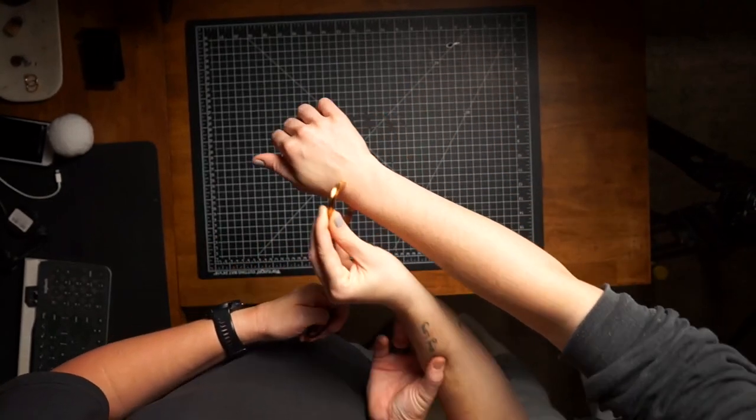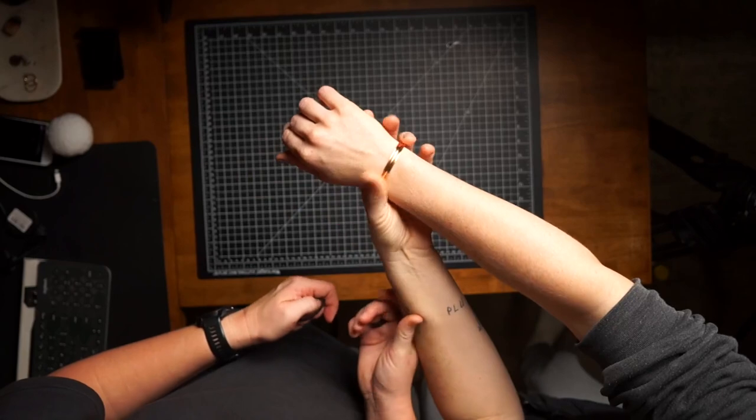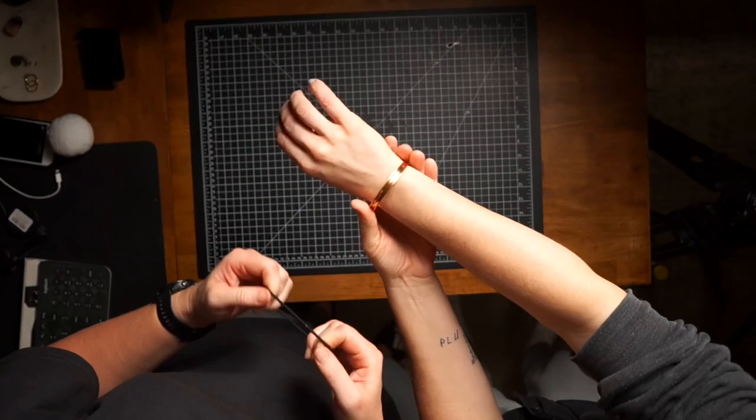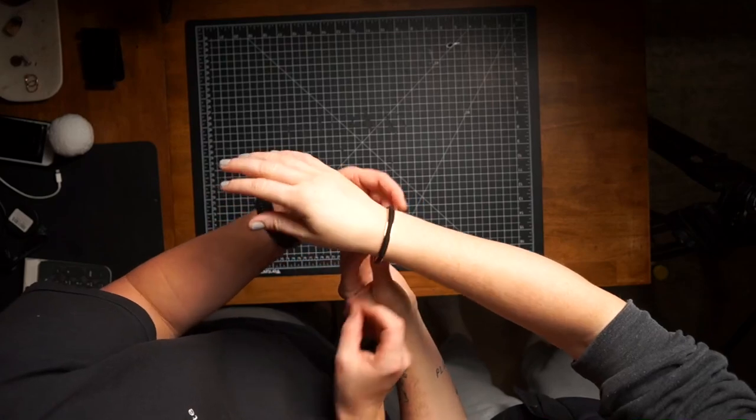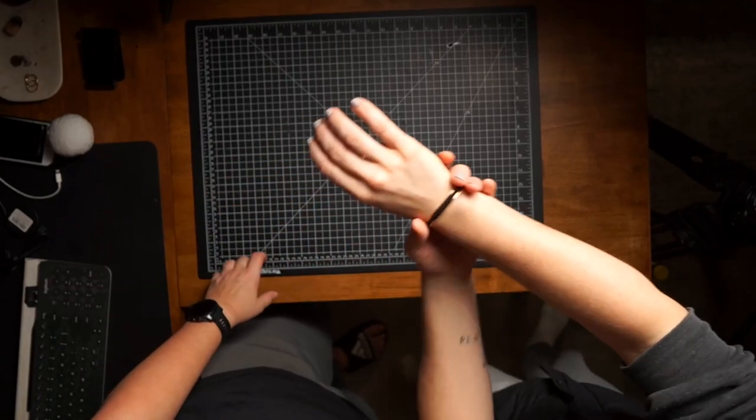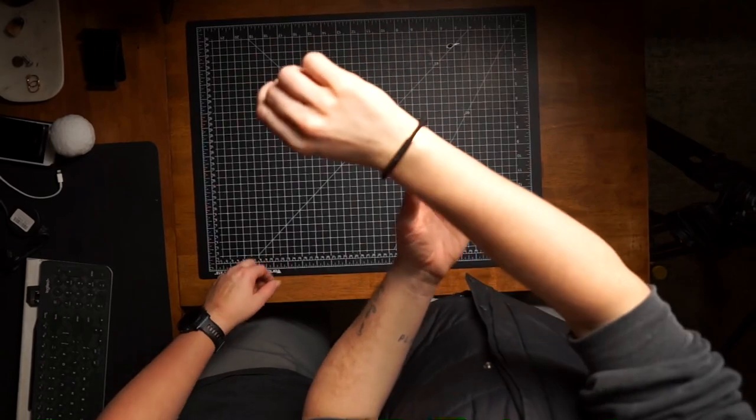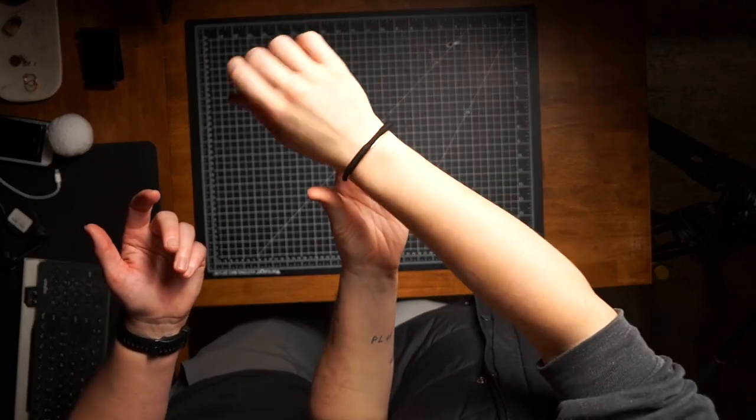It just slides on like that and then you put the hair tie around it. Now you're protected from the elastic and it works super well.